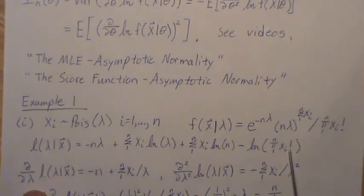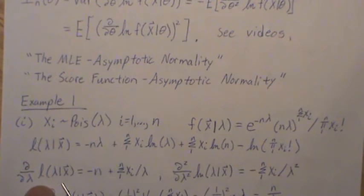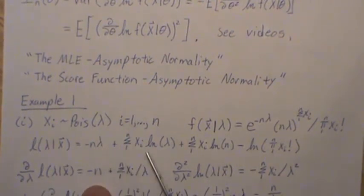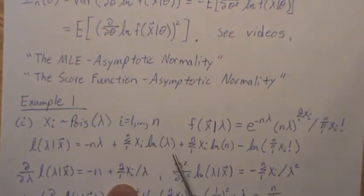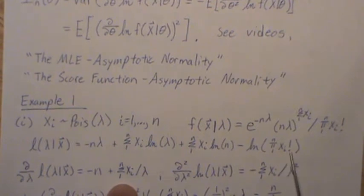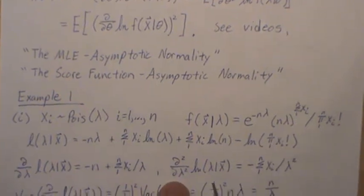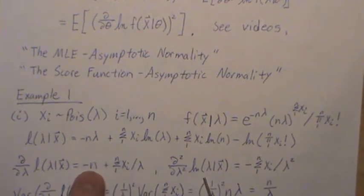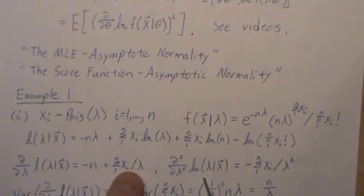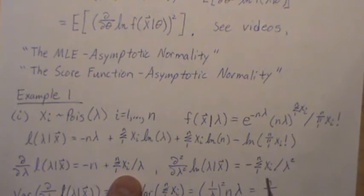Now if we take the derivative with respect to lambda of this, we get minus n, and we get one over lambda times the derivative of lambda, which is one — that drops out. There's no lambda in the next term, so it drops out too. Now the second derivative: the constant goes away, and we're left with minus the sum of xi over lambda squared.